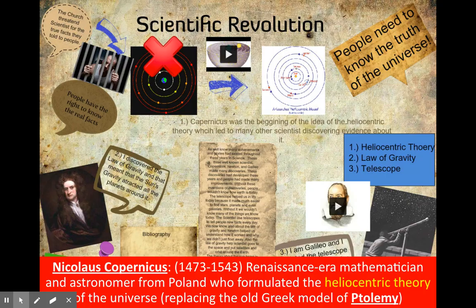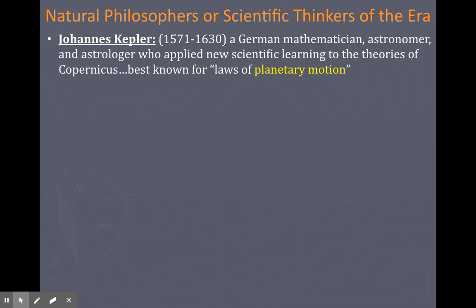These scientific thinkers called themselves natural philosophers — we call them scientists today. After Copernicus, the next person to discuss is Kepler — a German mathematician, astronomer, and astrologer who applied new scientific learning to the theories of Copernicus. He is best known for the laws of planetary motion, studying the elliptical patterns planets take around the sun and drawing on Copernicus's work. All great thinkers build on each other — no single person has a monopoly on all knowledge.